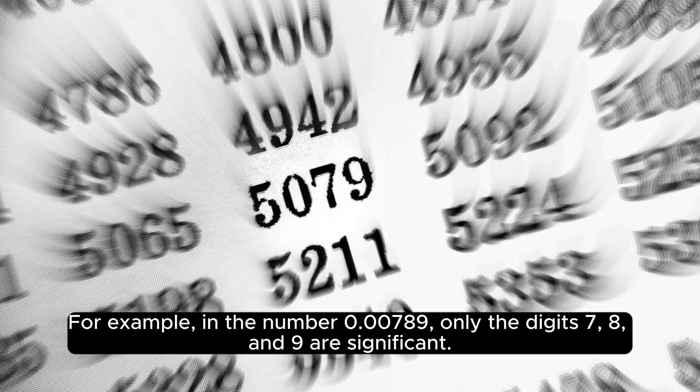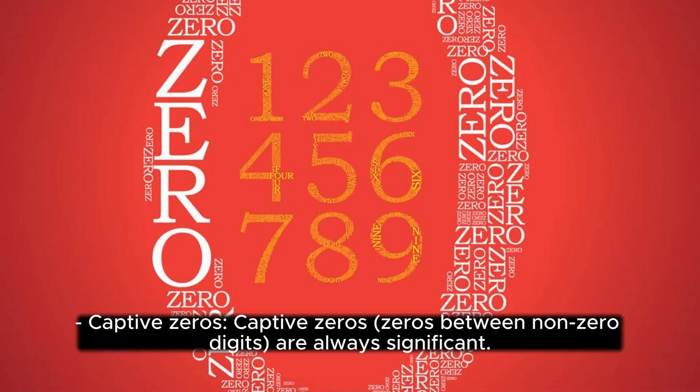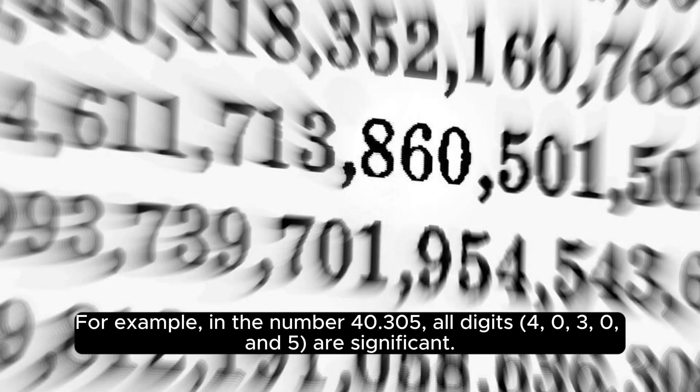Captive zeros: Captive zeros, zeros between non-zero digits, are always significant. For example, in the number 40.305, all digits 4, 0, 3, 0, and 5 are significant.